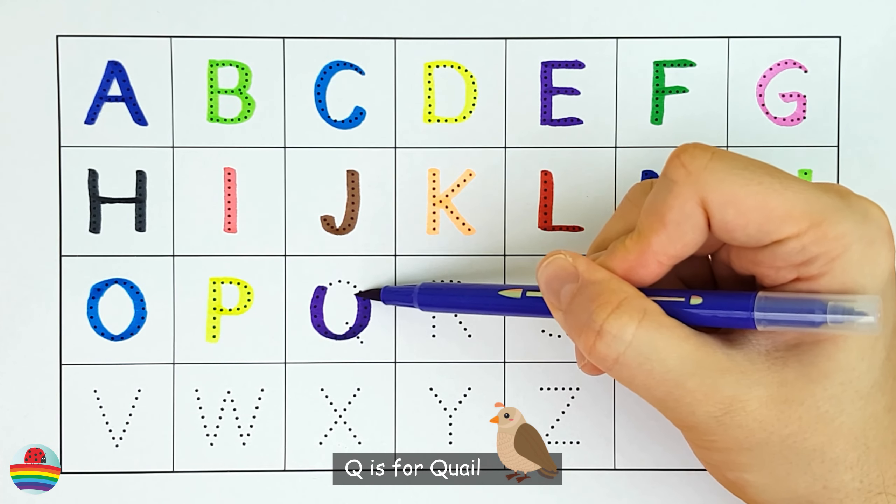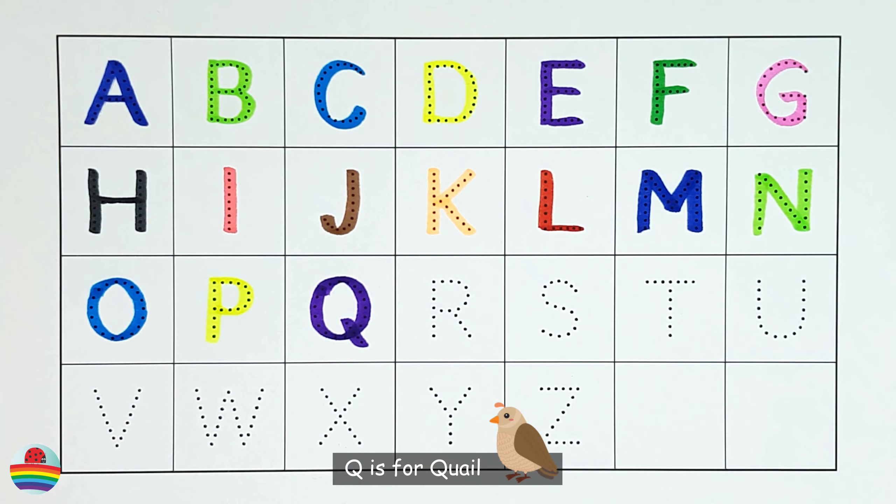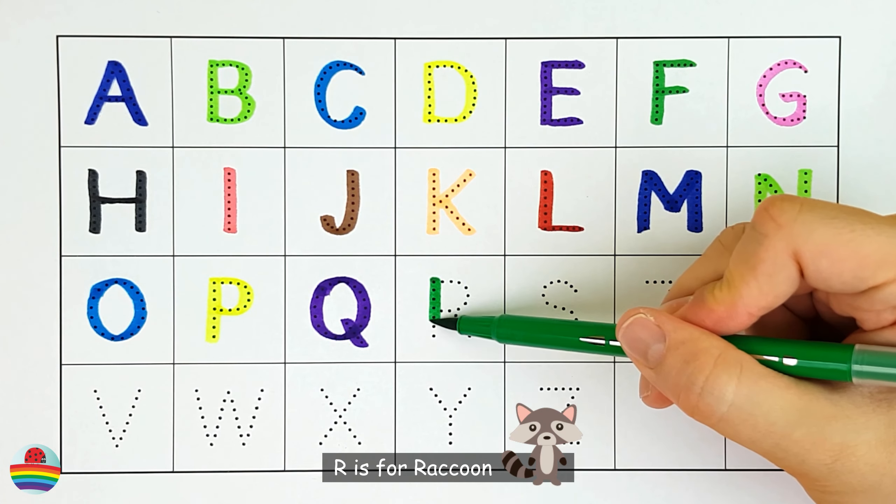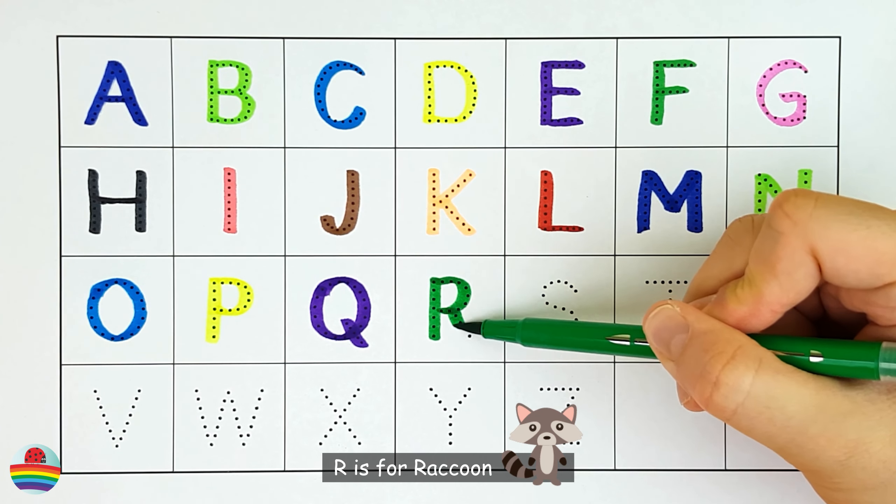Q. Q is for quail. Q. R. R is for raccoon. R.